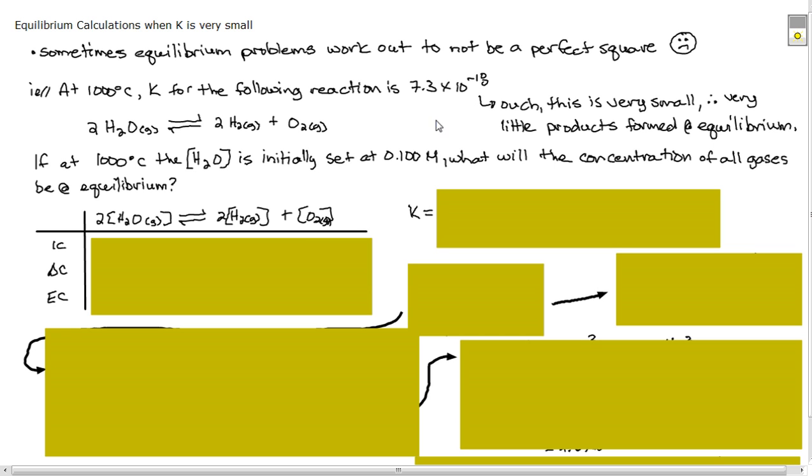So if we have 1000 degrees Celsius water and it's breaking down and the initial concentration is set at 0.100 molar or moles per liter, what will the concentration of all gases be at equilibrium? So before we even get into this, understand that this is a very big number compared to that. Therefore, the change in this is going to be very small. Because this is such a small number. If your exponent is really large in the negatives, you're going to have a very small change there. So again, we set up our ICE table.